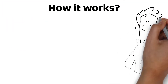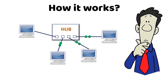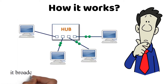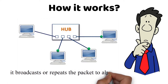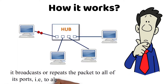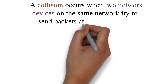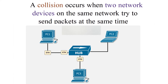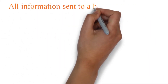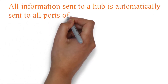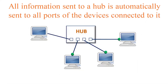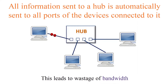How it works: When a hub receives a data packet from a network device at one of its ports, it broadcasts or repeats the packet to all of its ports, i.e., to all other network devices. A collision occurs when two network devices on the same network try to send packets at the same time. All information sent to a hub is automatically sent to all ports of the devices connected to it, which leads to wastage of bandwidth.